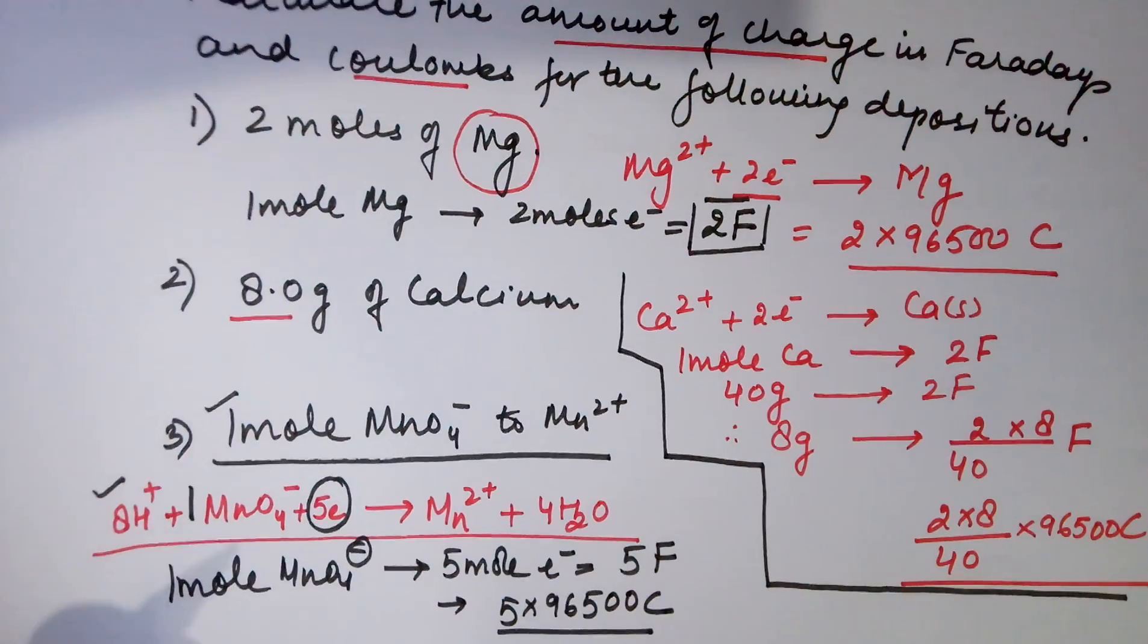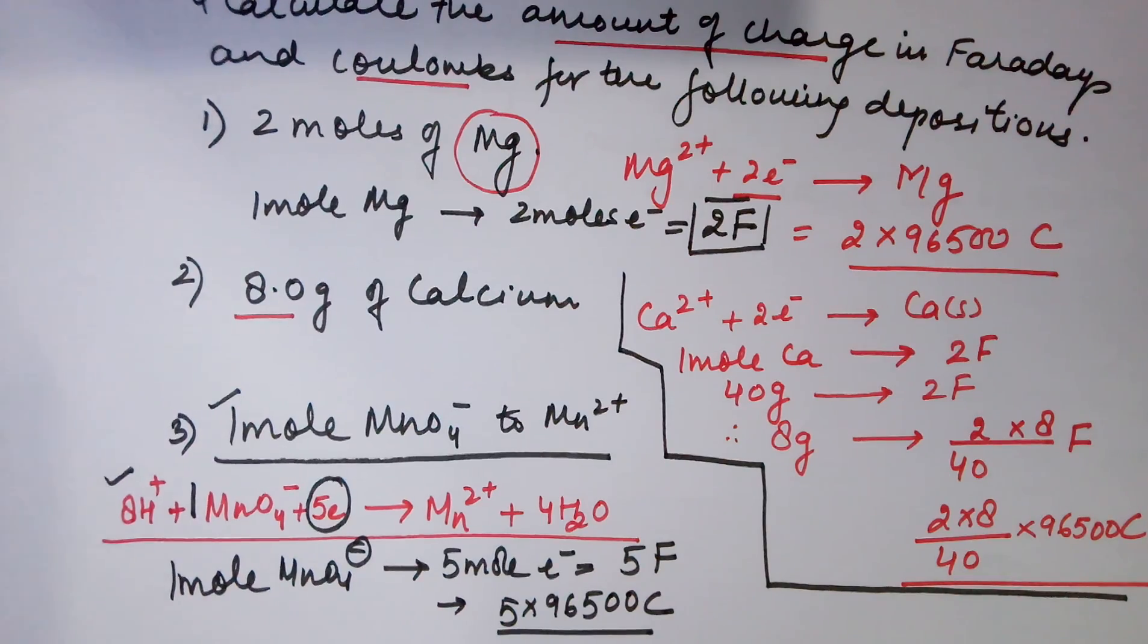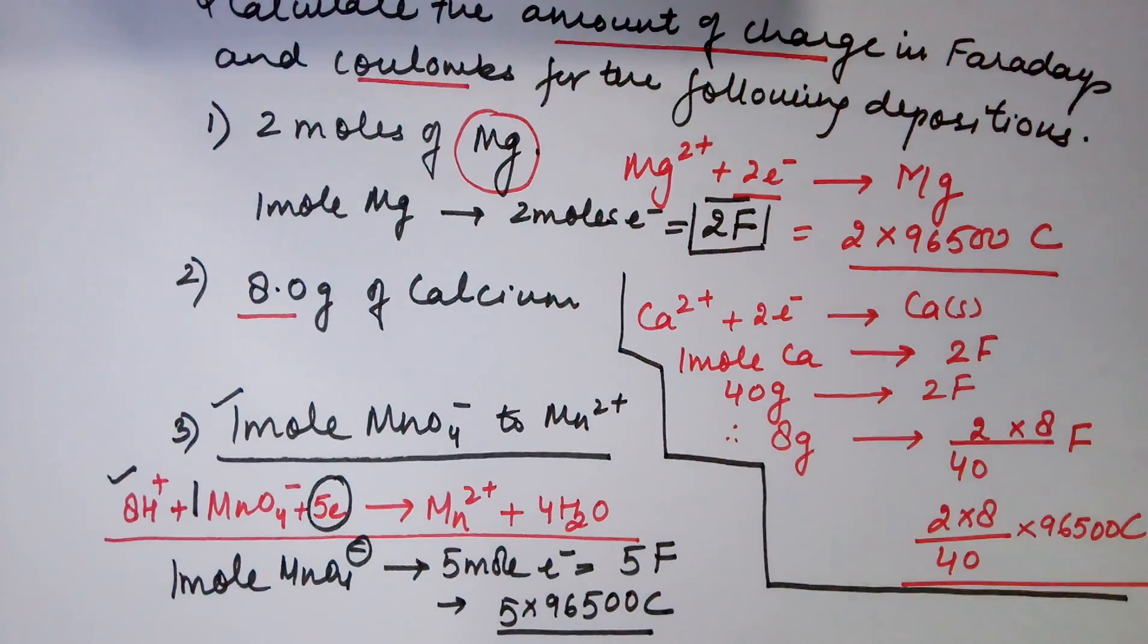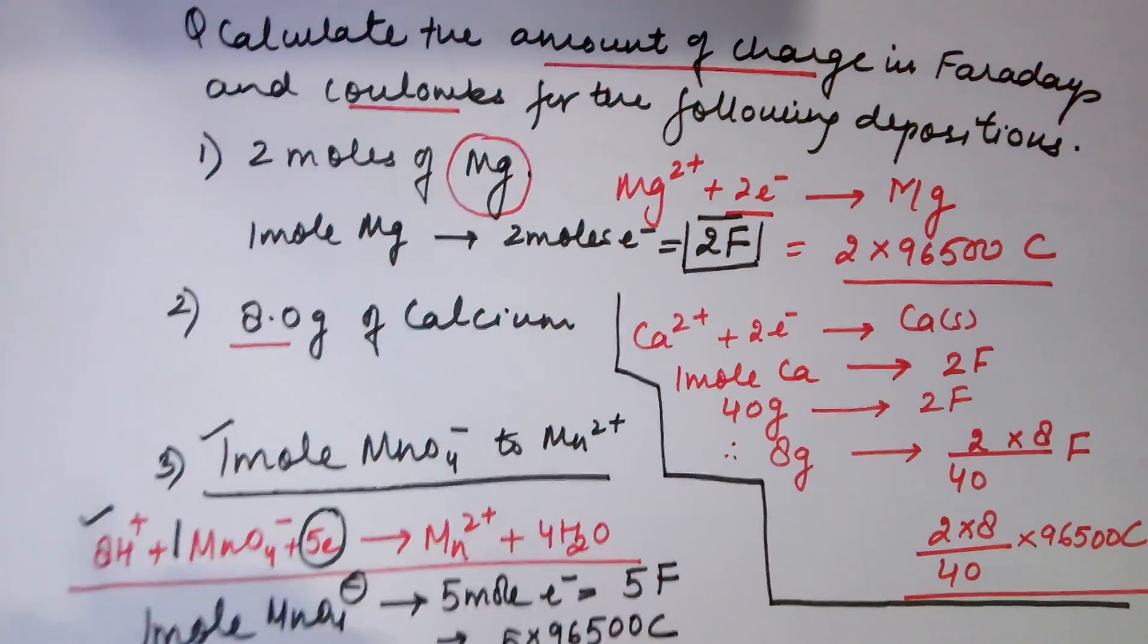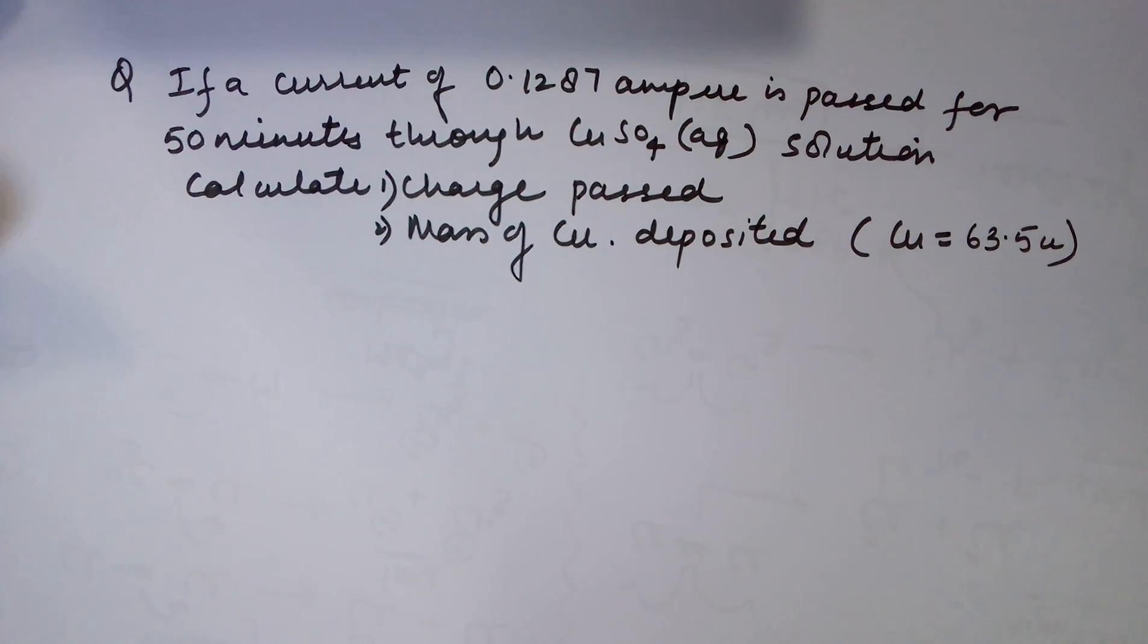That is the answer in Faraday's. If you require the same answer in coulombs, the answer would be 5 × 96500 coulombs. That was the qualitative aspect. We will do one more question of Faraday's first law to drill the concepts a little better. This question is for copper deposition.